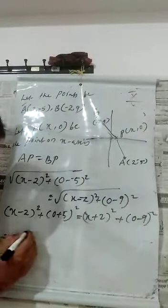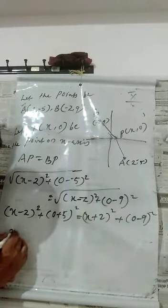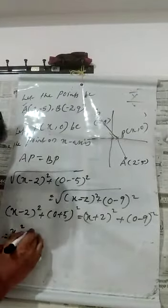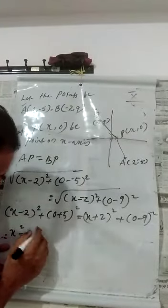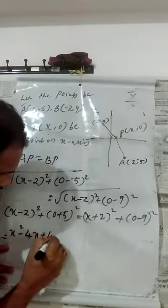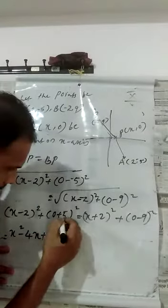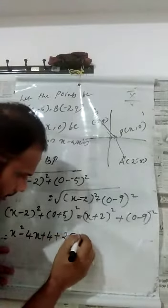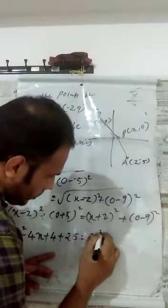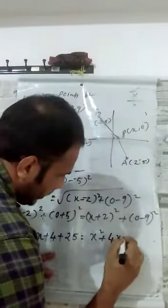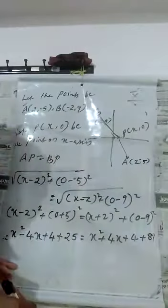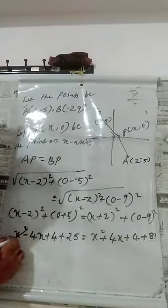Expanding using (a - b)² = a² - 2ab + b²: the left side gives x² - 4x + 4 + 25, and the right side gives x² + 4x + 4 + 81. So we have x² - 4x + 4 + 25 = x² + 4x + 4 + 81.